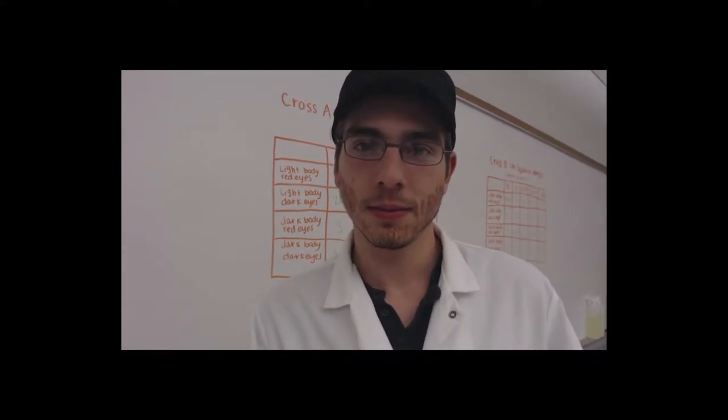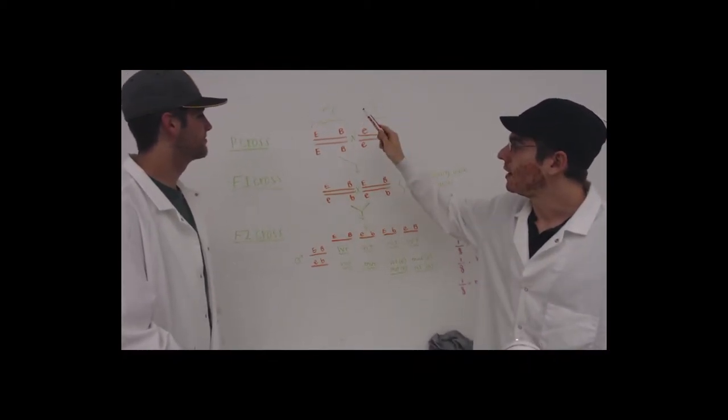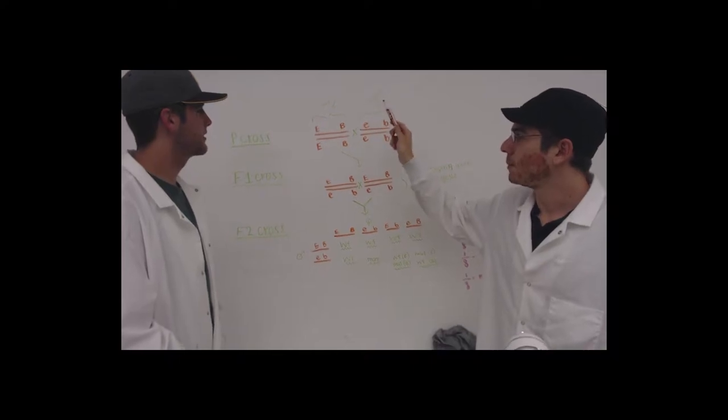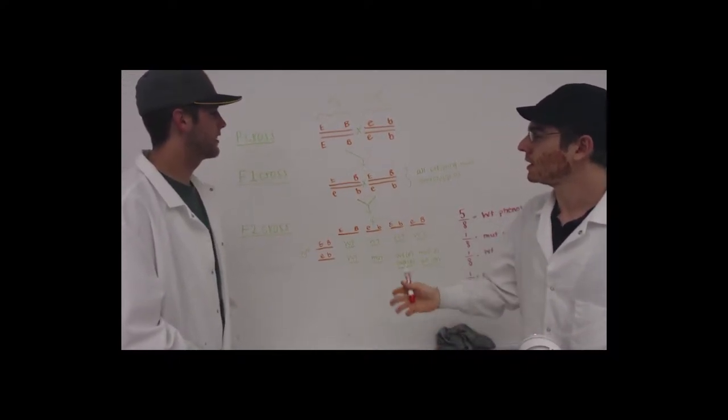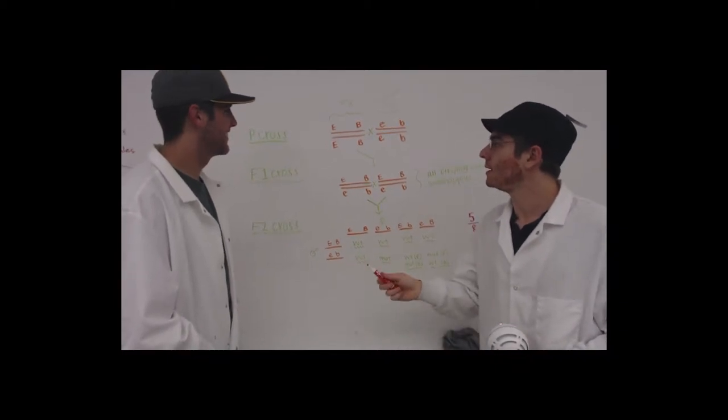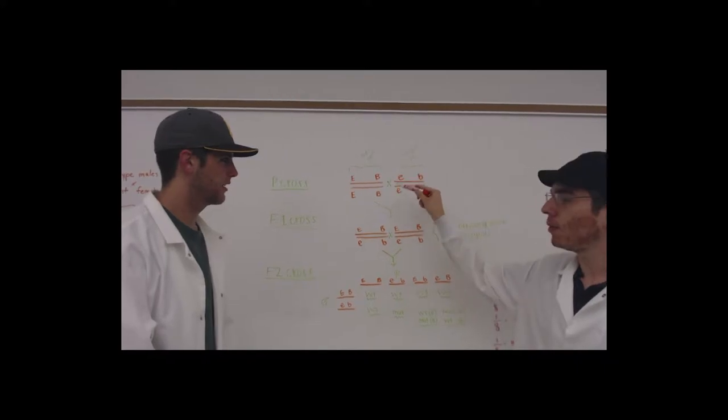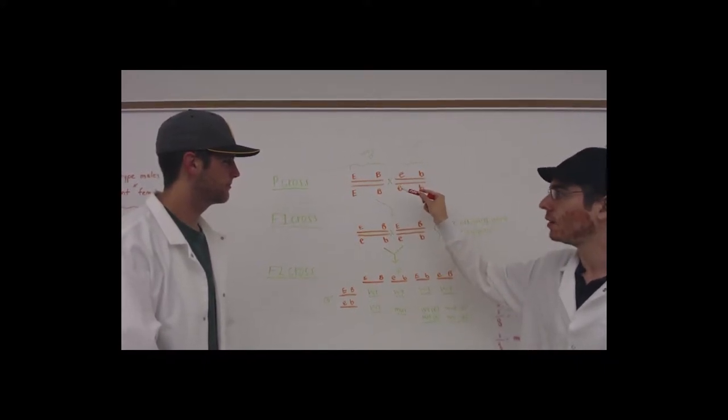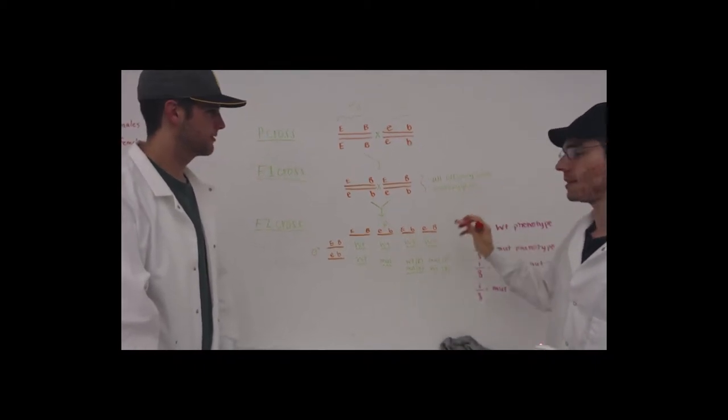All right Alex, so as you can see here, the eye and the body gene are both linked on the same chromosome, so they are linked to each other and not independent. So as you can see in the P-cross here, both the parents are pure breeding, which then means that all their offspring were heterozygous.